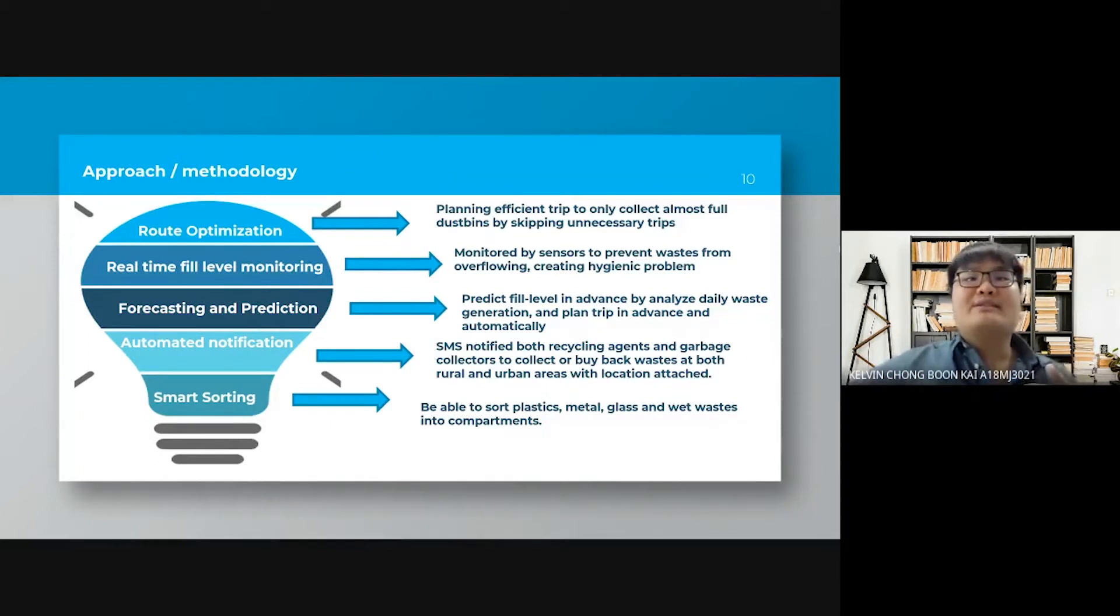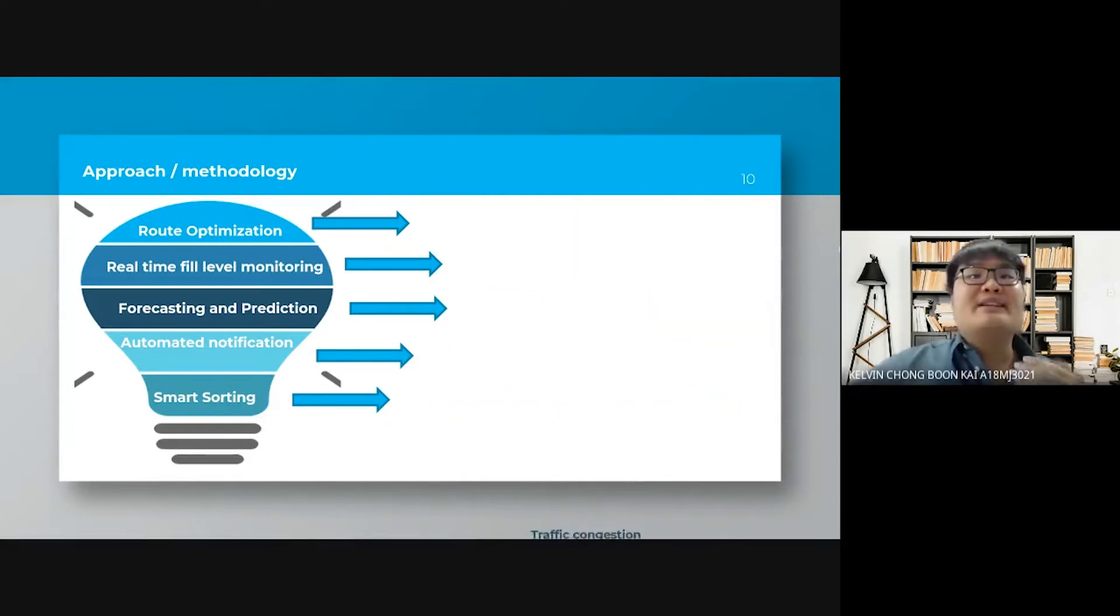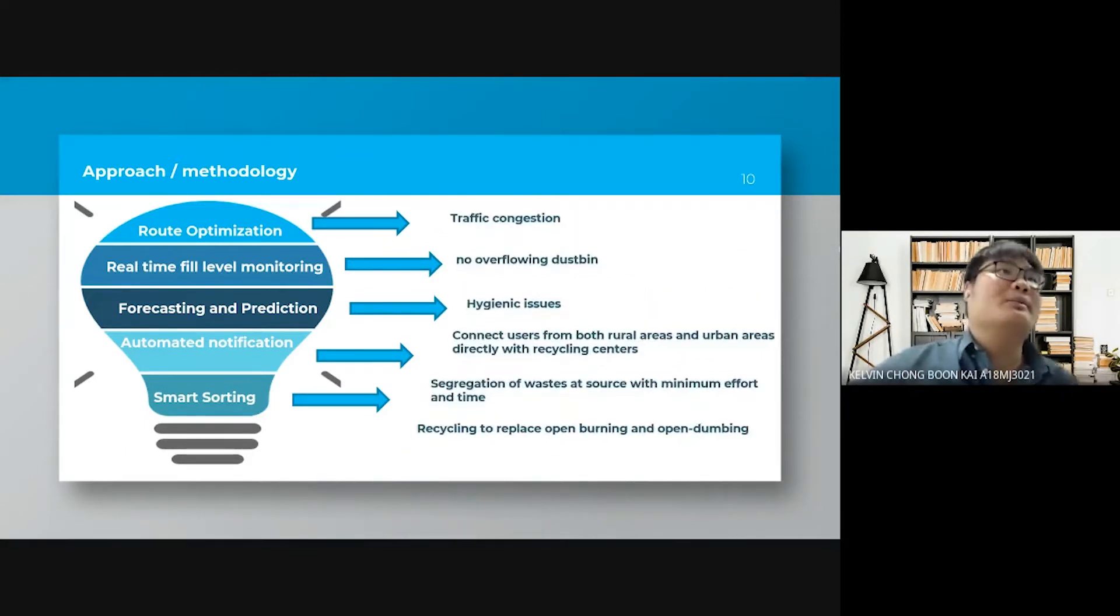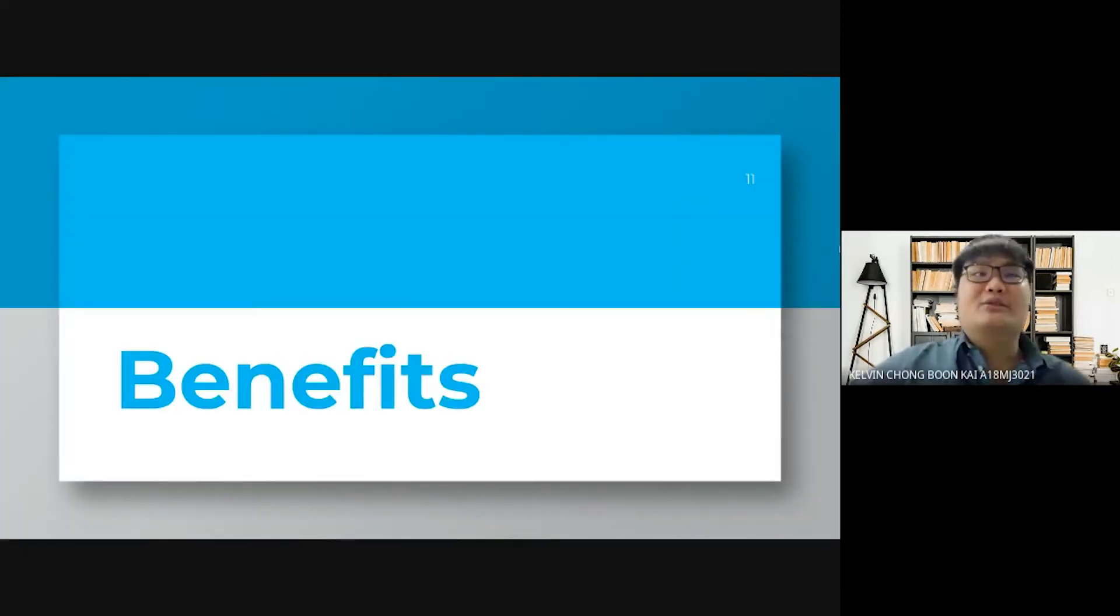Smart sorting bins enable the smart sorting features that help to promote segregation and increase the recycling rate with minimum effort. This approach is specifically designed to solve the before mentioned problems. Next, I will pass to Ara to talk about the benefits.